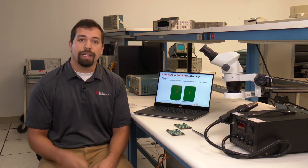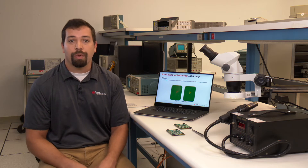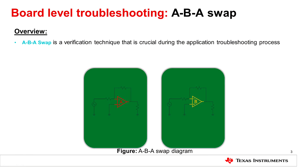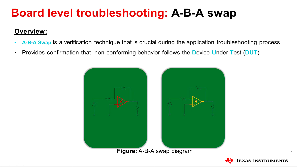Before we begin, let's discuss the ABA swap process in some detail. The ABA swap is a great verification technique that you can apply during the application troubleshooting process. It's important to know that the ABA swap helps to confirm if that non-conforming behavior follows the device under test, also known as the DUT.